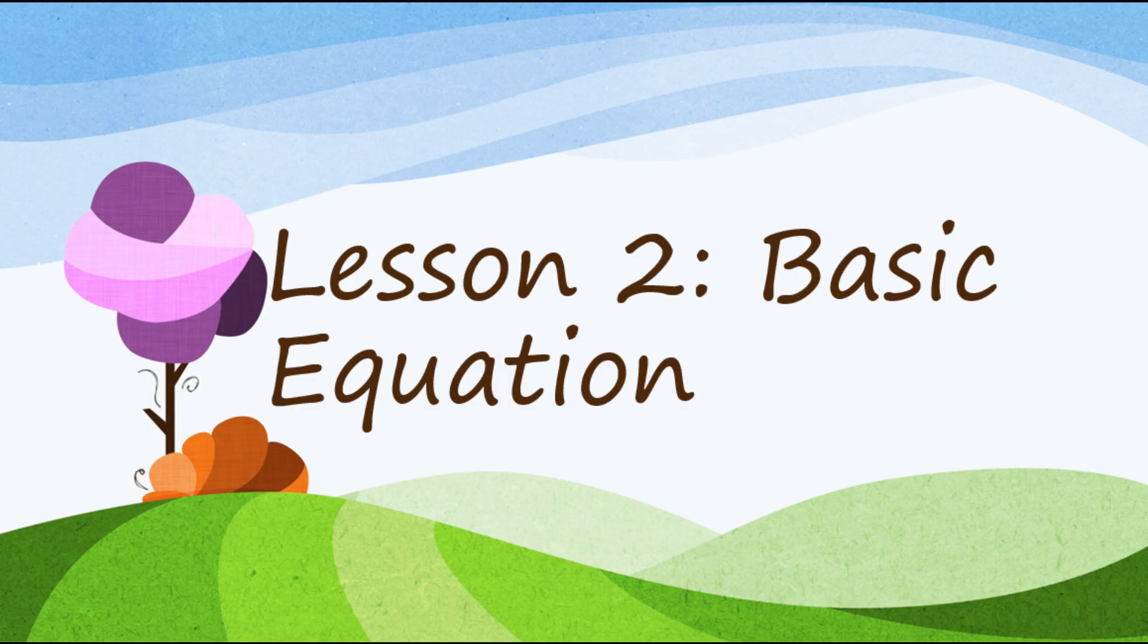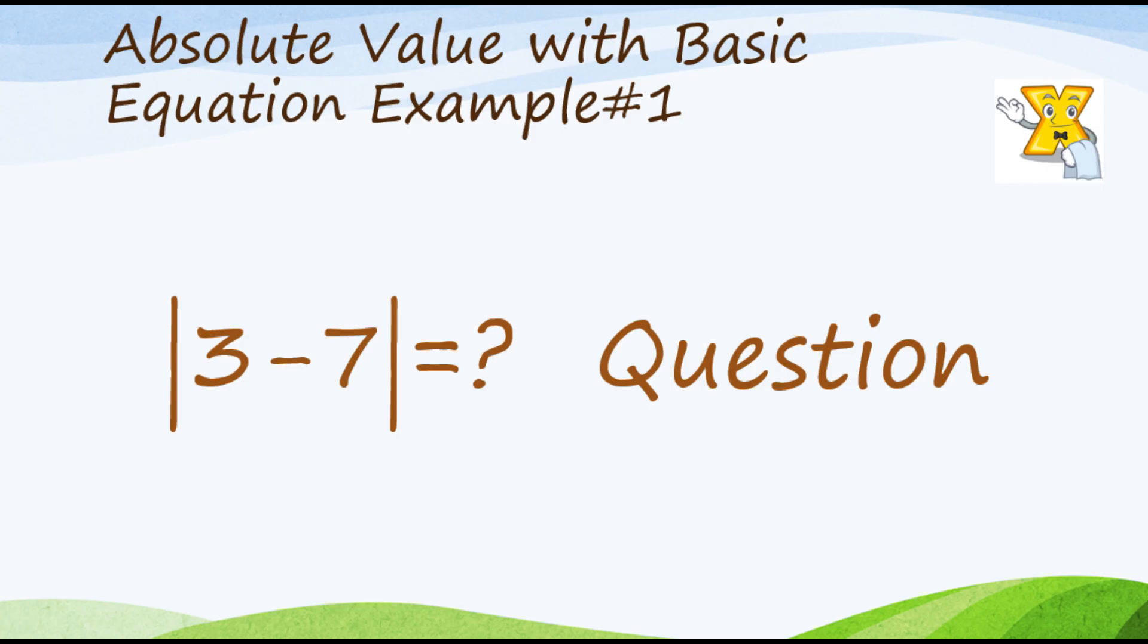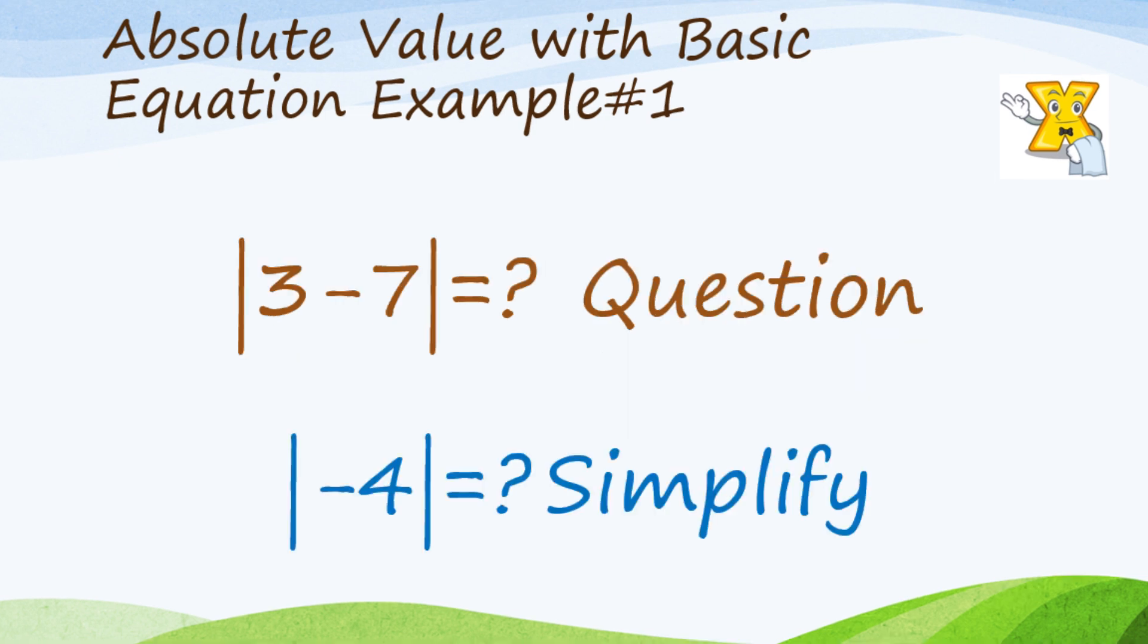So paano naman kung basic equation na katulad nito? Absolute value ng 3 minus 7. So para makakuha natin yung absolute value niyan, isasimplify mo muna sa loob ng absolute value. So ang sagot ay negative 4. Ngayon dahil isang number na lang siya, pwede mo na siyang masagutan. Which is the absolute value of negative 4 ay 4.